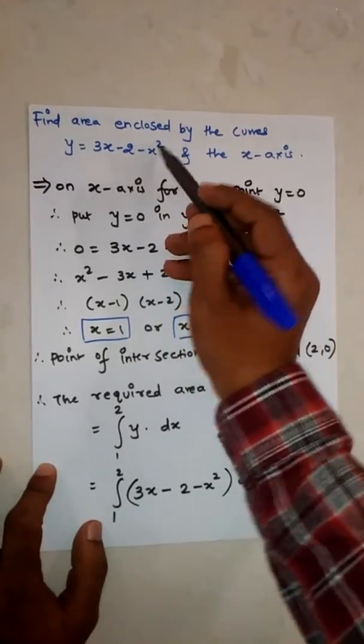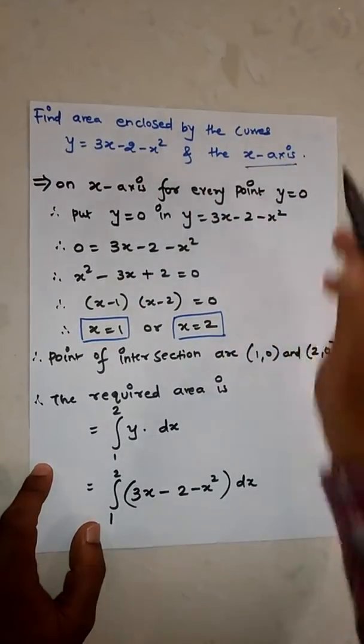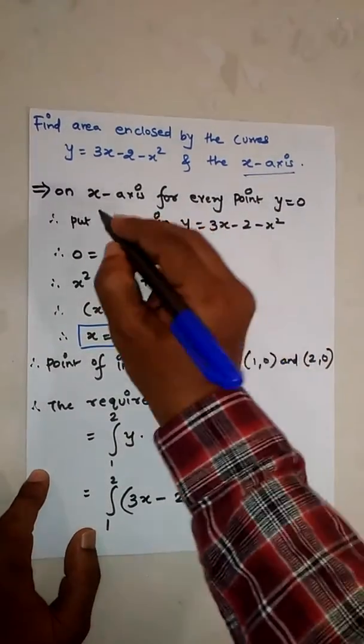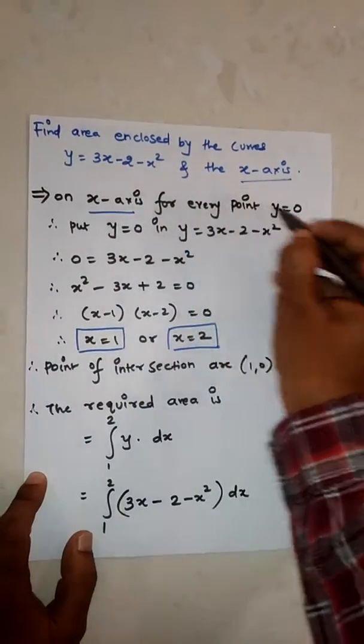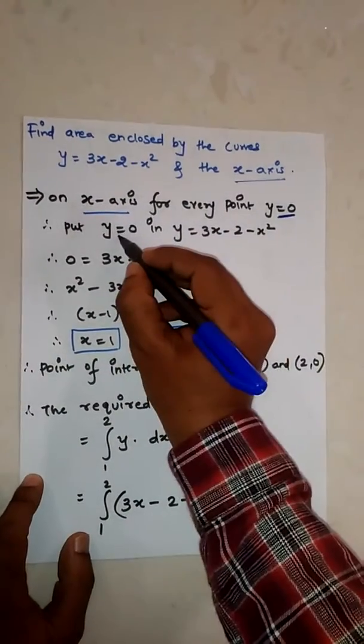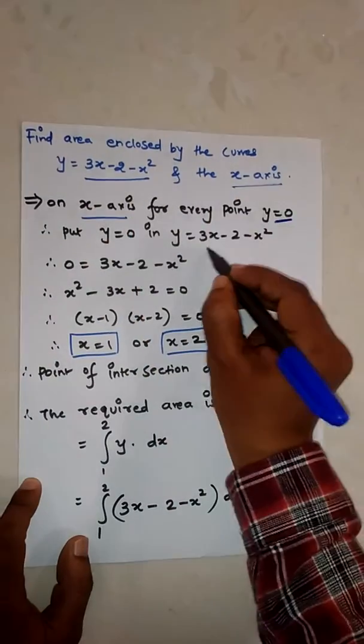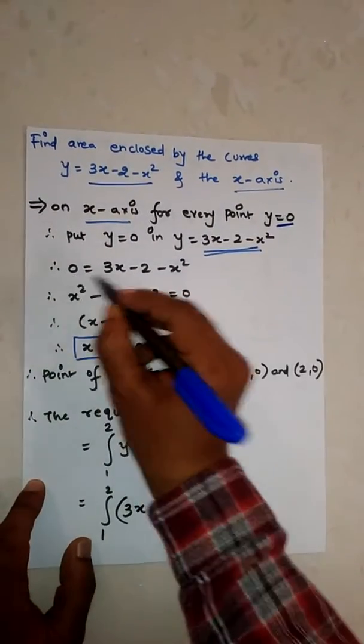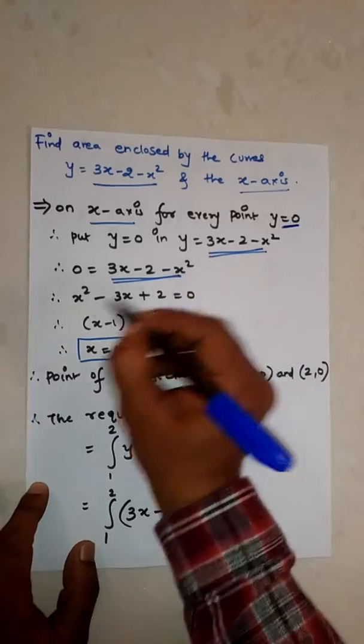First thing is that on the x-axis, for every point y equals 0. So put y equals 0 in this equation. 0 equals the given equation.